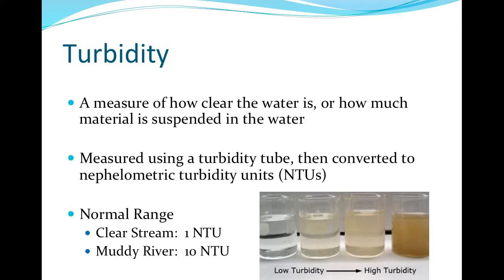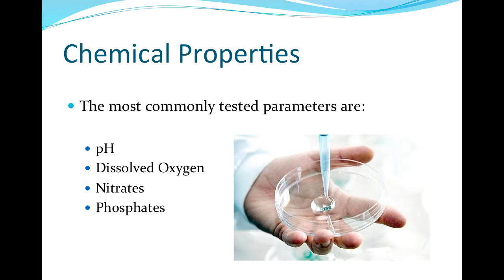Another method of measuring turbidity is using nephelometric turbidity units, or NTUs. The normal range for a clean stream is 1 NTU, while a muddy river can get as high as 10 NTU. The chemical properties routinely measured to assess water quality are pH, dissolved oxygen, nitrates, and phosphates.